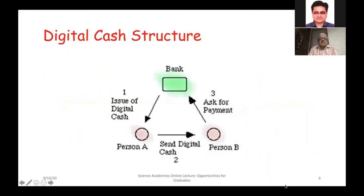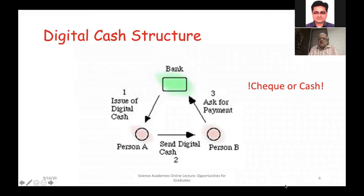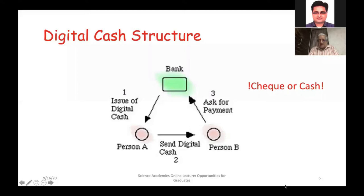Consider a simple digital cash structure: a bank issues digital cash to person A, A sends it to person B, and B submits it to the bank to get payment. The question is whether there is a real difference between a check and cash — technically there isn't. So what kind of digital cash can be constructed, and what mathematics and technology are needed?